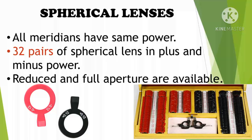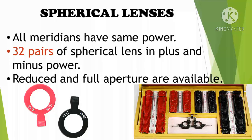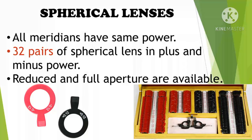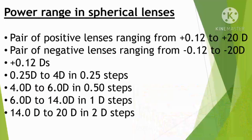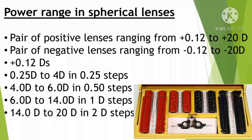There are two types of lenses in the trial box: spherical lenses and cylindrical lenses. Spherical lenses have the same power in each meridian. There are 32 pairs of plus spherical lenses and 32 pairs of minus spherical lenses, making 64 pairs total. These spherical lenses are available in both Reduced Aperture and Full Aperture forms.